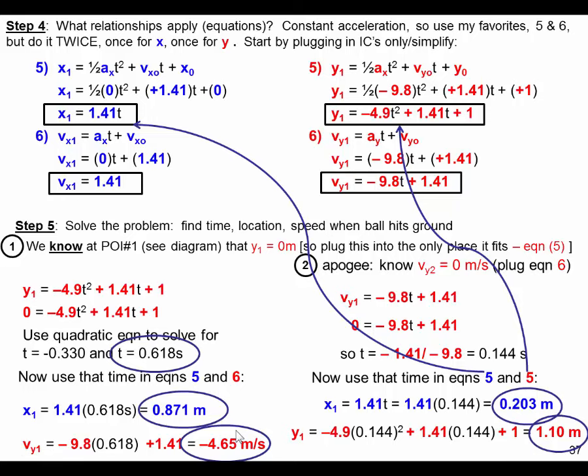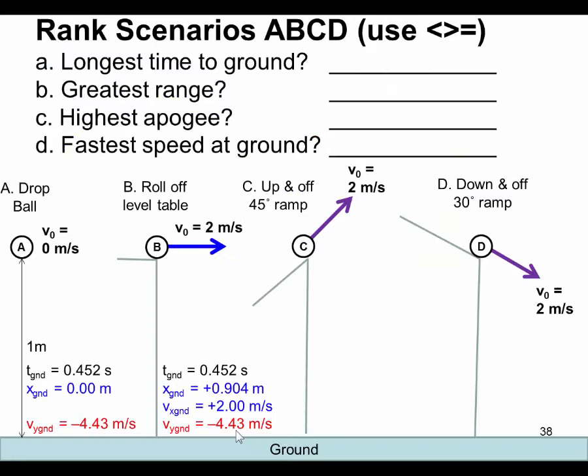So those are our answers for parts 1 and 2. So let's just take a look at our ranking scenarios again. So now we can add our item C in here. So as you can see, this is a longer time to ground. We predicted that. This was something we didn't know. We couldn't really guesstimate. It was going to be close. We knew it was between B and C. Well, it looks like C beat out B, but we had to do the math to figure it out.